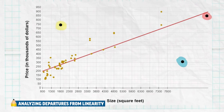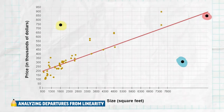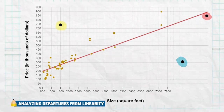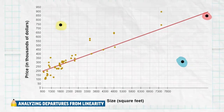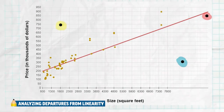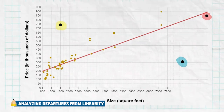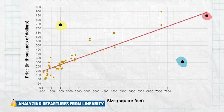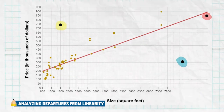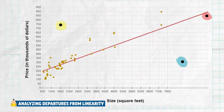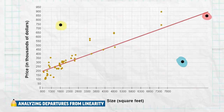But for that square footage, it has a very high price tag. Maybe it's in a very expensive area like San Francisco, where even small houses cost a lot of money. Again, it doesn't fit the pattern. For a house of that size, it should have a much lower price.